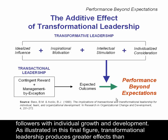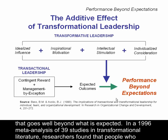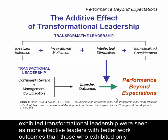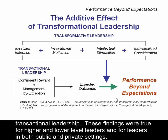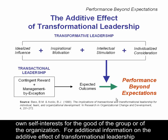As illustrated in this final figure, transformational leadership produces greater effects than transactional leadership. Whereas transactional leadership results in expected outcomes, transformational leadership results in performance that goes well beyond what is expected. In a 1996 meta-analysis of 39 studies in transformational literature, researchers found that people who exhibited transformational leadership were seen as more effective leaders with better work outcomes than those who exhibited only transactional leadership. These findings were true for higher and lower-level leaders, and for leaders in both public and private settings. Transformational leadership moves followers to accomplish more than what is usually expected of them; they become motivated to transcend their own self-interests for the good of the group or of the organization.